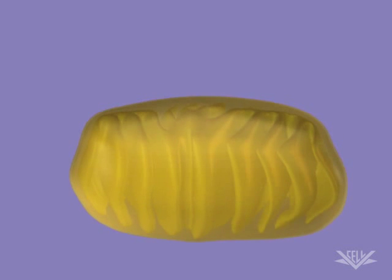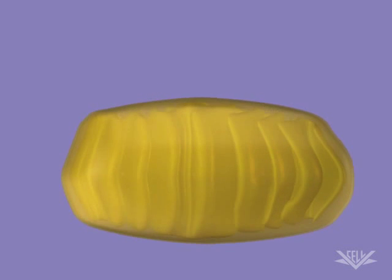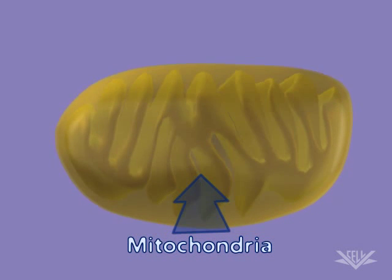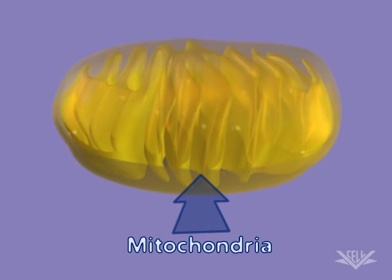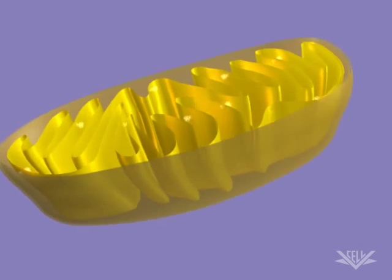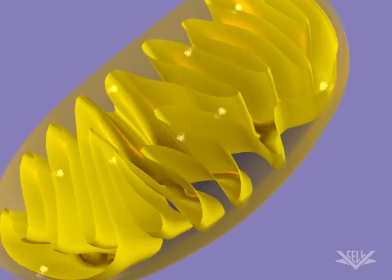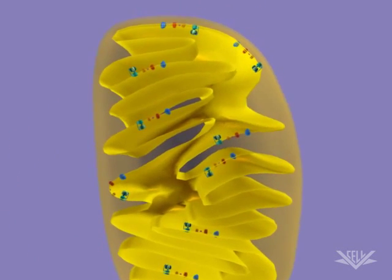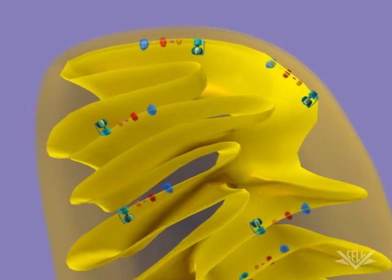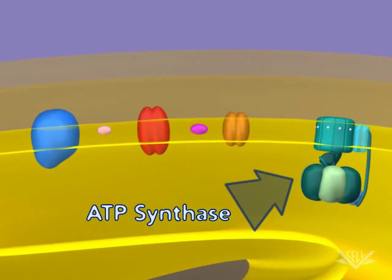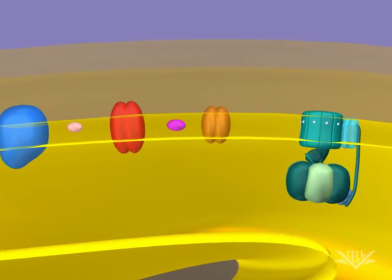Gradients and the potential energy they create are key aspects of the biological world. A good example of the use of a gradient occurs in the mitochondria when ATP is synthesized. ATP is synthesized by ATP synthase, a large complex of membrane-bound protein. Here we see ATP synthase, along with other membrane-bound proteins.